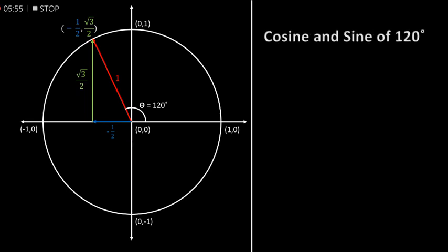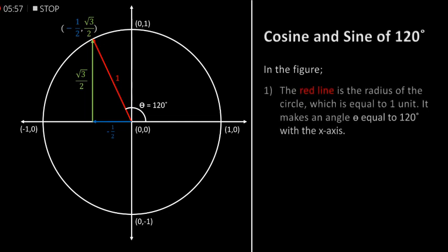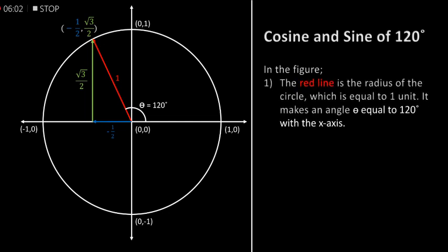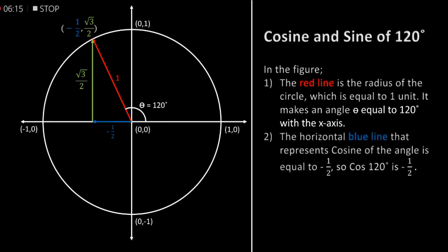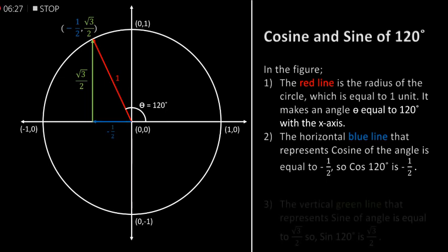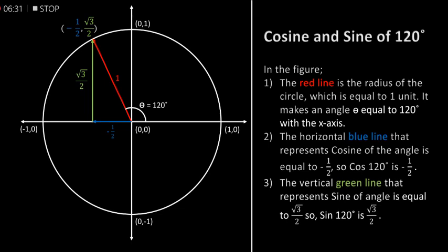Cosine and sine of 120 degrees. In the figure, the red line is the radius of the circle which is equal to 1 unit. It makes an angle theta equal to 120 degrees with the x-axis. The horizontal blue line that represents cosine of the angle is equal to minus 1 by 2, so cos of 120 degrees is equal to minus 1 by 2. The vertical green line that represents sine of the angle is equal to half of square root of 3, so sine of 120 degrees is half of square root of 3.